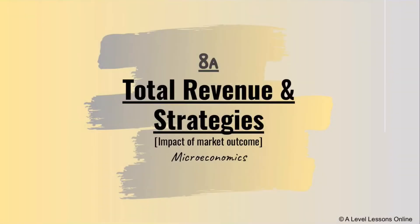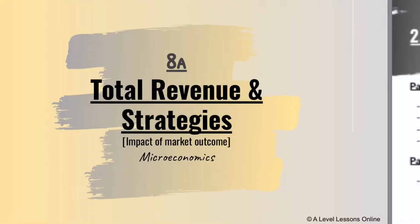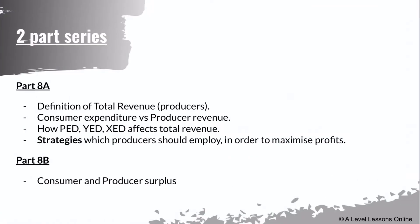Welcome back to A-Level Lessons Online. Today I'm covering Microeconomics Part 8a — the first part of a two-part series. Part 8a covers total revenue and strategies for producers based on market outcomes, including the impact of PED. Part 8b will cover producer and consumer surplus, so make sure you stay tuned for both parts.